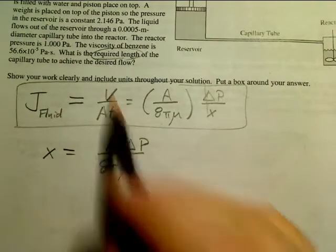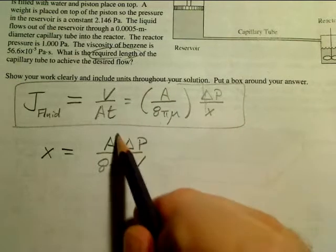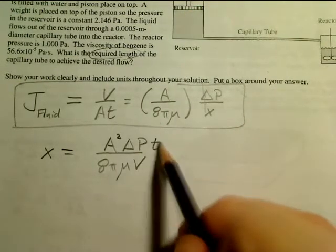And then I'm going to pull V down here, and I'm going to pull area to the top, making it area squared, and then also times time.